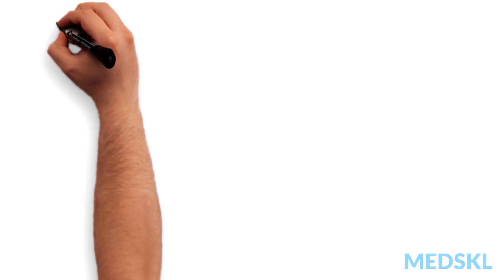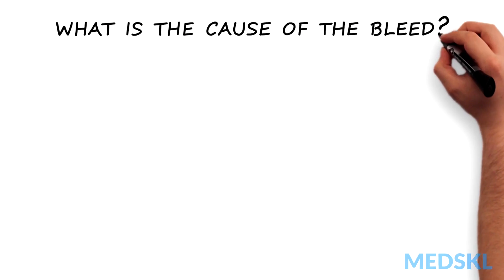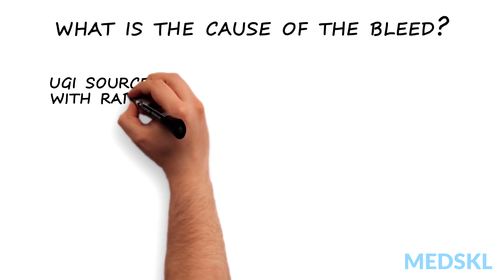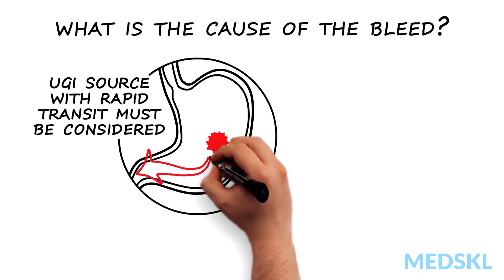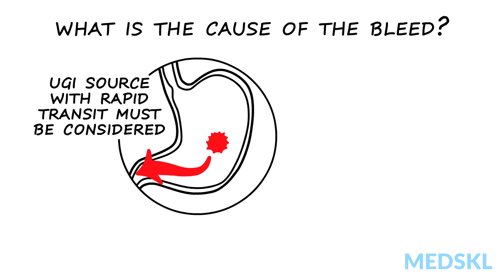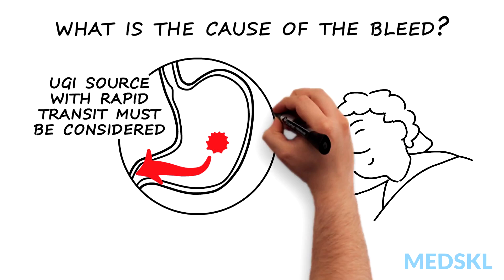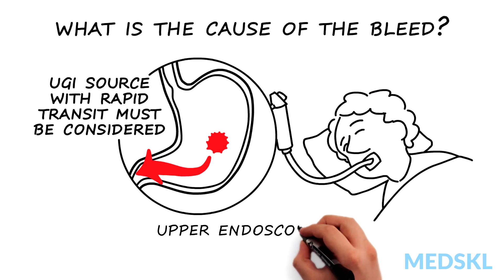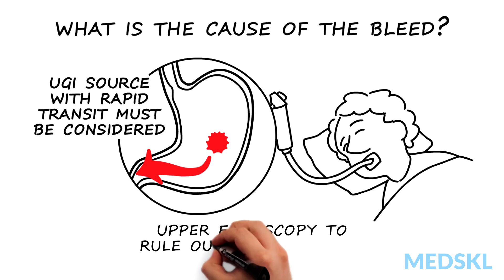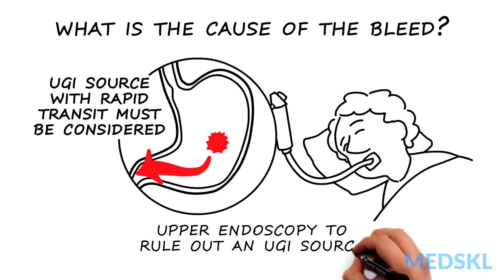Once stable, establish the cause of the bleed. An upper GI source with rapid transit must be considered. An upper endoscopy is often indicated to rule out an upper GI source in the face of hemodynamic instability.